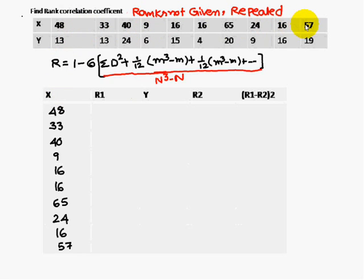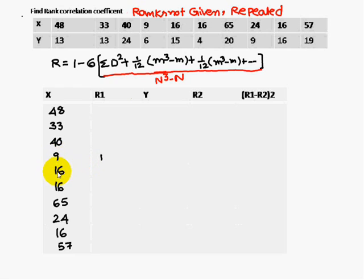I have taken the X column and written the values from 48 to 57. Now I have to give the ranks. The least value is 9, so I give it rank 1. The next highest value is 16, and there are three 16s — so we need to decide how to rank them.